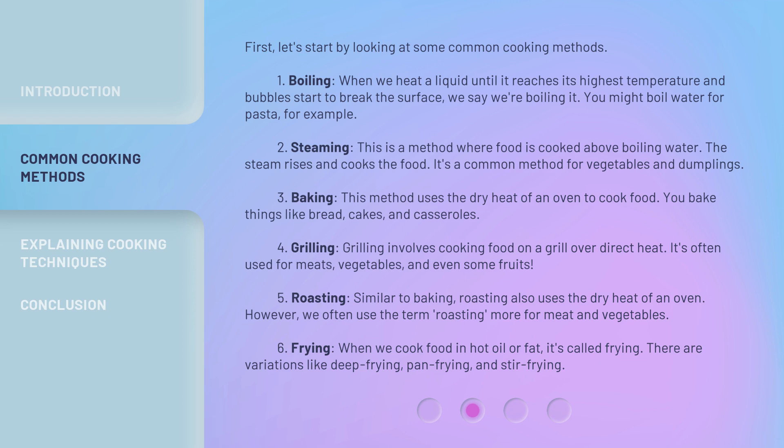3. Baking. This method uses the dry heat of an oven to cook food. You bake things like bread, cakes, and casseroles. 4. Grilling. Grilling involves cooking food on a grill over direct heat. It's often used for meats, vegetables, and even some fruits. 5. Roasting. Similar to baking, roasting also uses the dry heat of an oven. However, we often use the term roasting more for meat and vegetables. 6. Frying. When we cook food in hot oil or fat, it's called frying. There are variations like deep frying, pan frying, and stir frying.